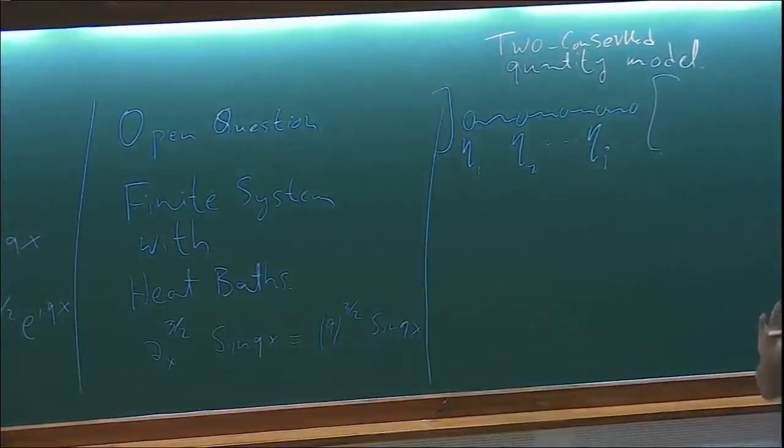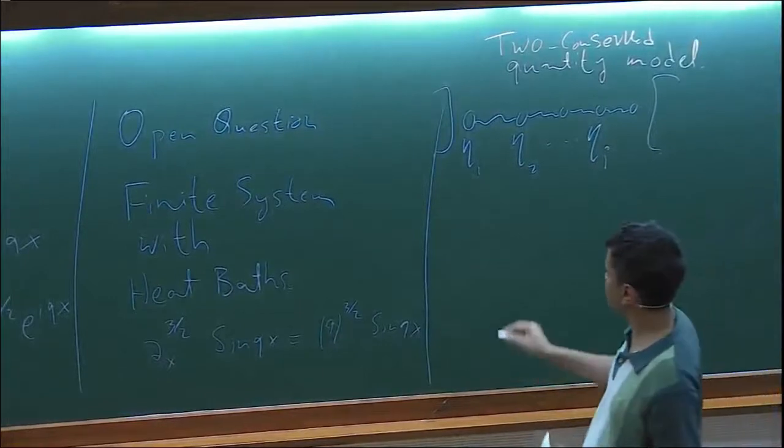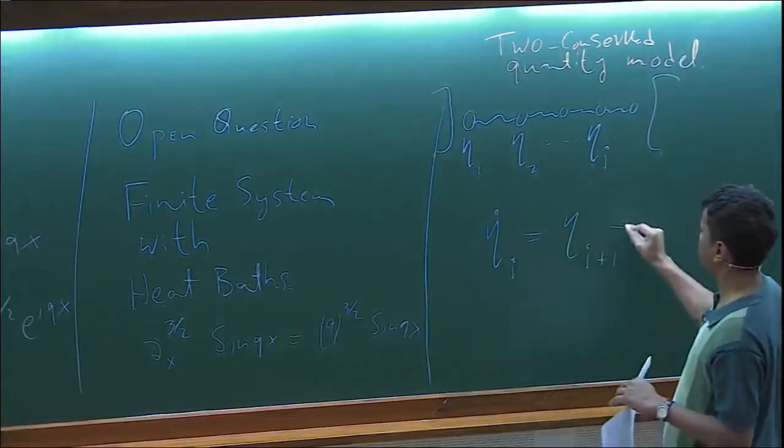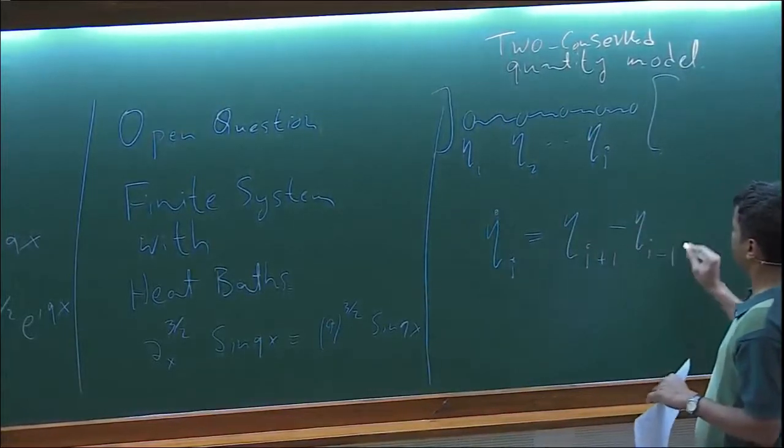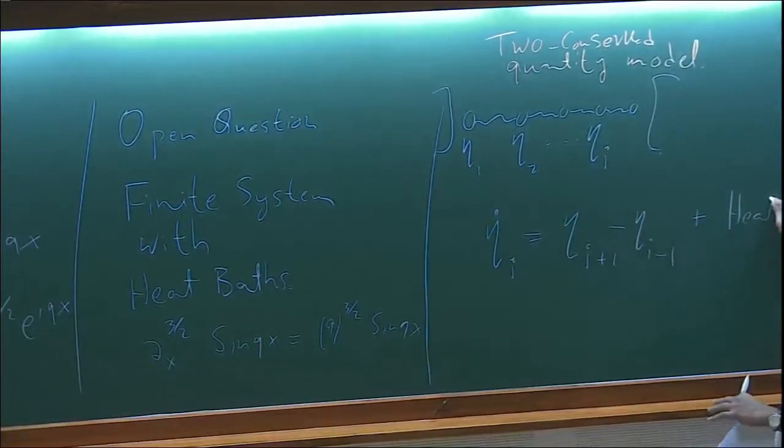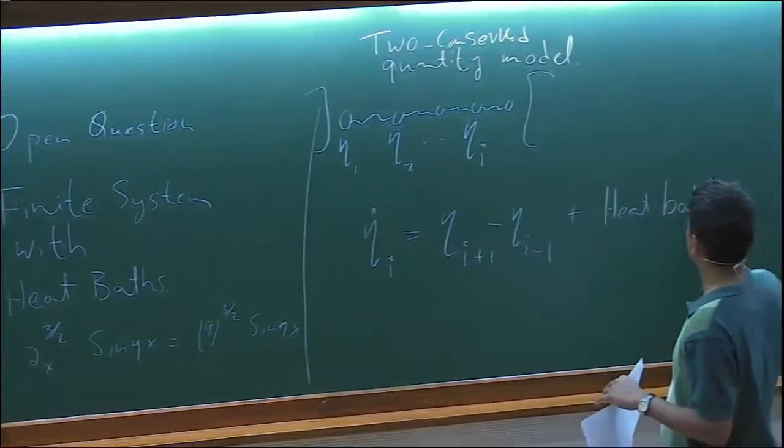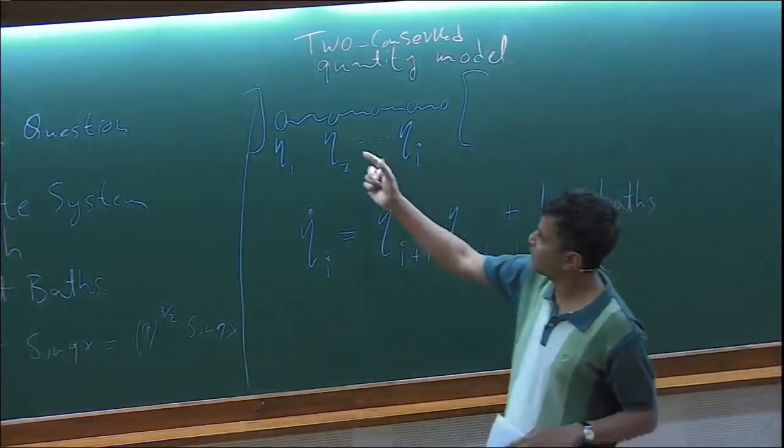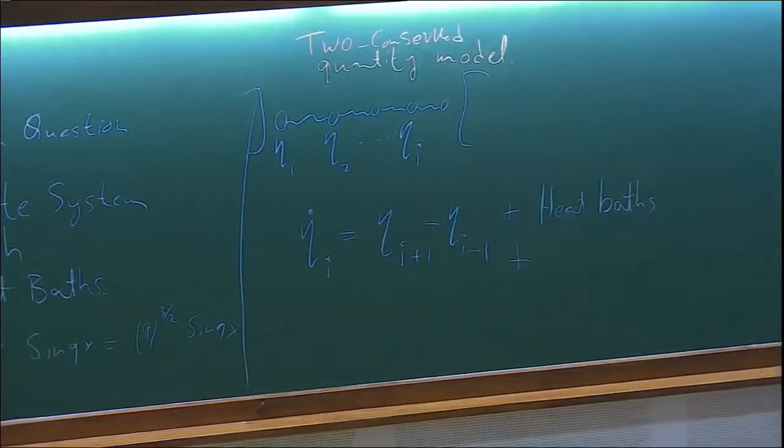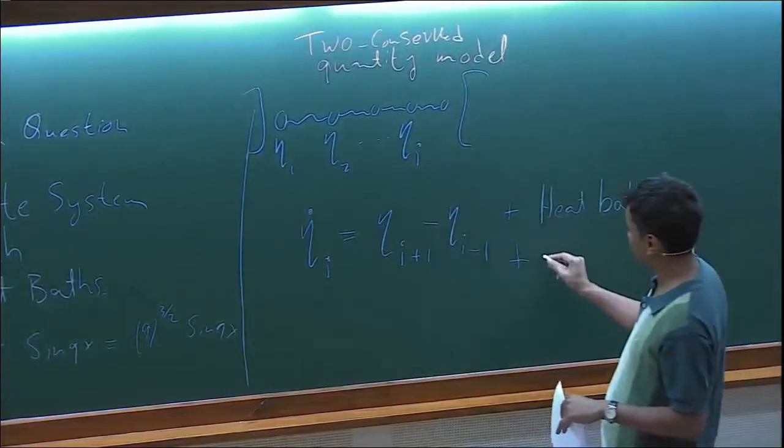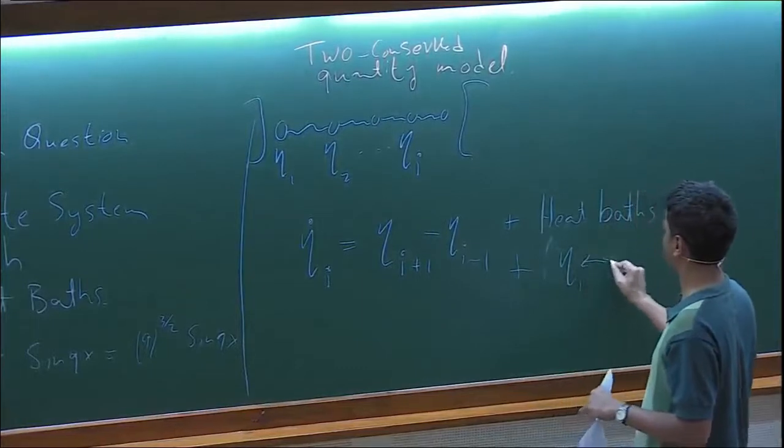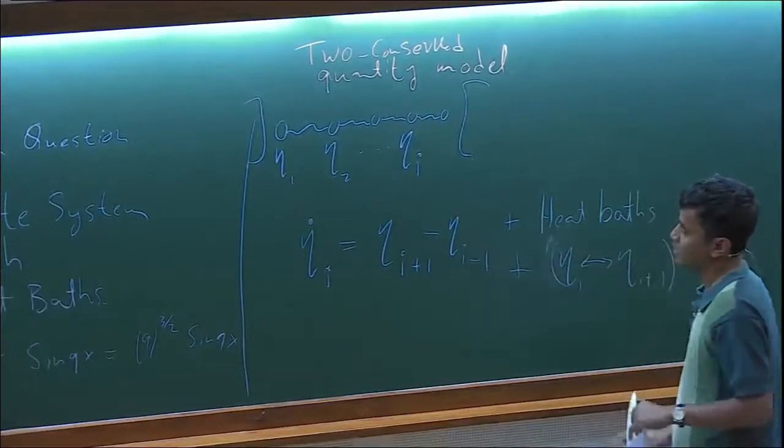You don't have position and momentum, you just have etas, just one variable. The equations of motion are just eta i dot equals eta i plus one minus eta i minus one. Then you have the boundary Langevin heat baths, and you also have exchange process. You exchange eta i and eta i plus one. I have three minutes. It'll take me one minute. Exchange of...